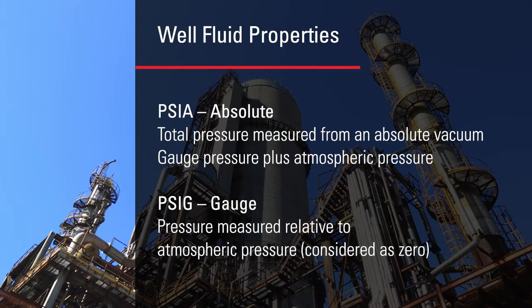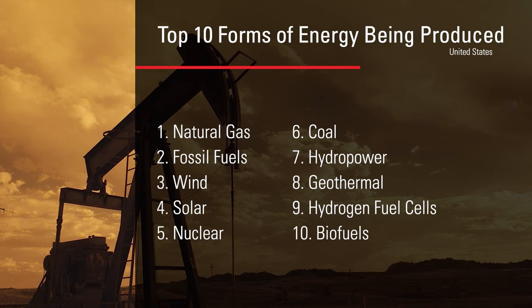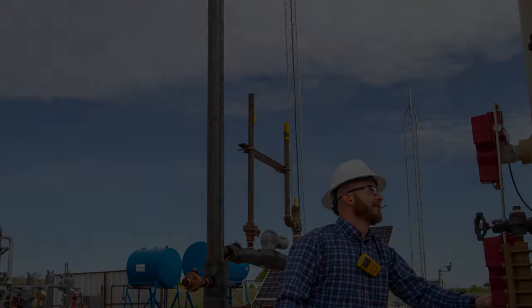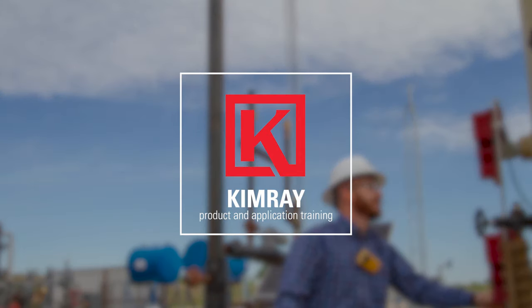Different producers need to know different data points. All pressures are not measured the same — PSIA may be more relevant in the midstream sector, while PSIG is more commonly used in the upstream sector. Here is a list of the top 10 forms of energy being produced in the U.S. today; some have been used for decades while others are growing in use across the country. Thanks for participating in this training. This concludes the chapter for the oil and gas industry.